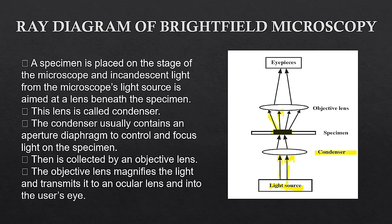The objective lens magnifies this image. The objective lens is what determines how much magnification our microscope provides. By looking at the objective lens or eyepiece lens, we can understand the magnification of our microscope. The magnified image is then produced through the objective lens — that is how our bright field microscope works. Everything is shown in the diagram here which you can read.